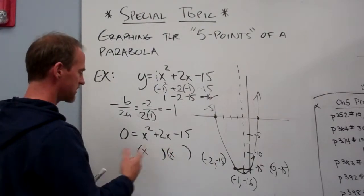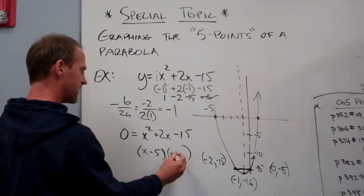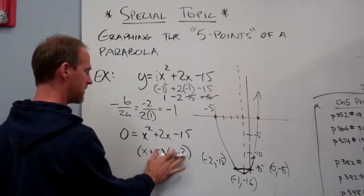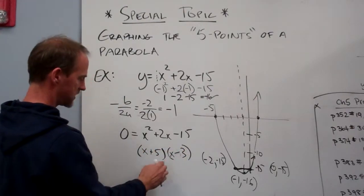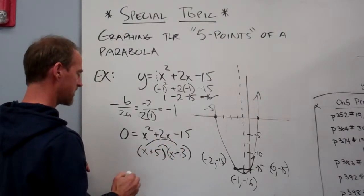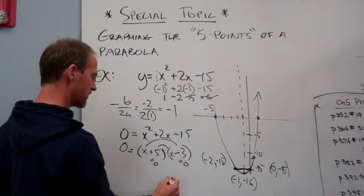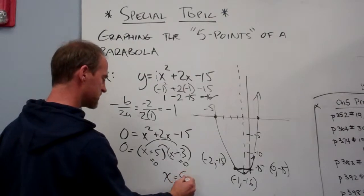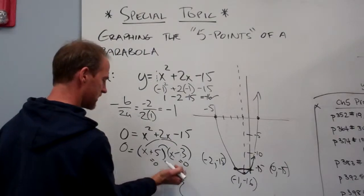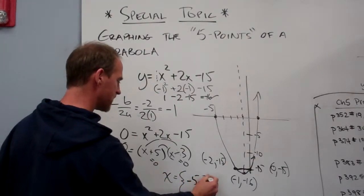Maybe you can factor this while you're pausing the camera. Minus 5 and plus 3 will work out. Whoops, plus 5 and minus 3. Because when I do the rainbow check, it's going to give me my plus 2x there. Well, that's going to be 0 when this is 0, and when that's 0, x then has its 0s or its x-intercepts.